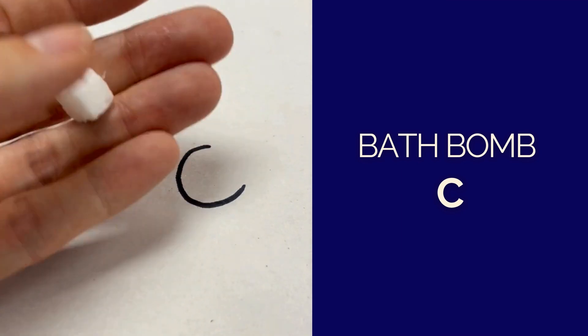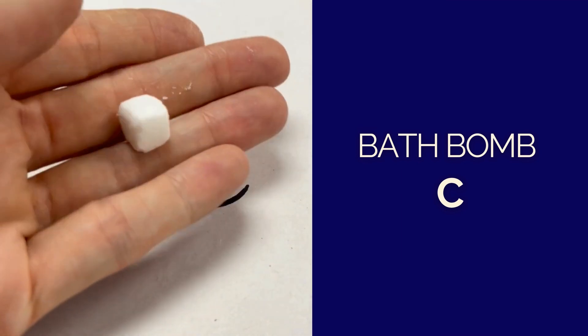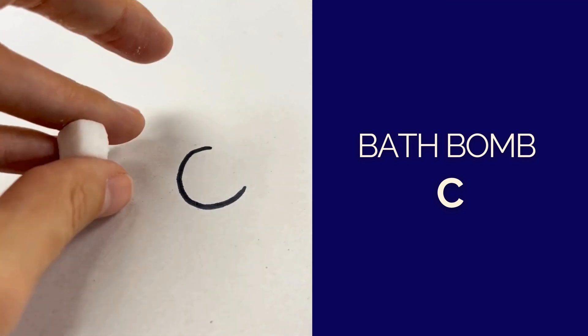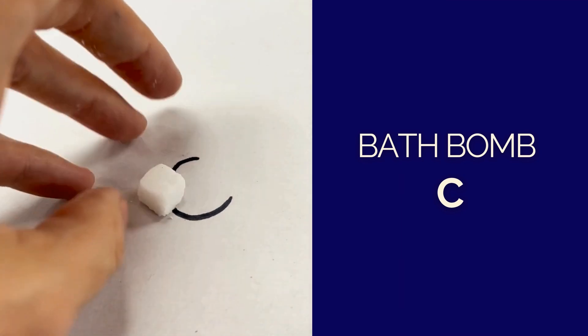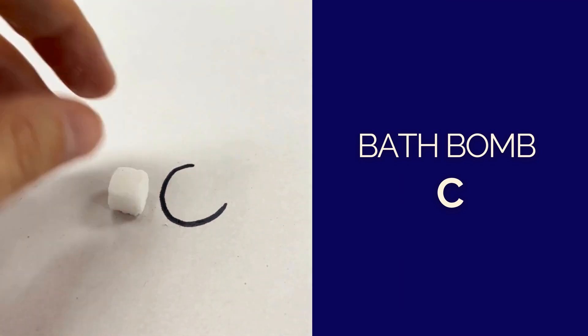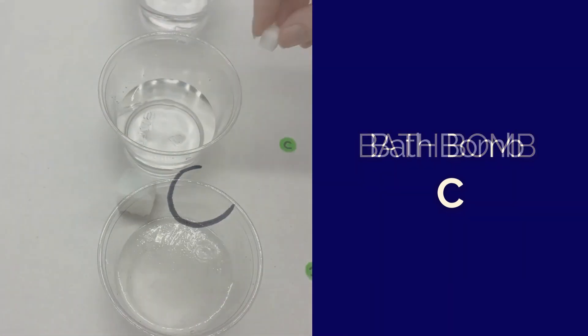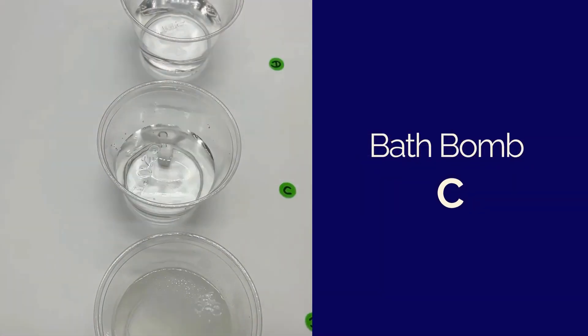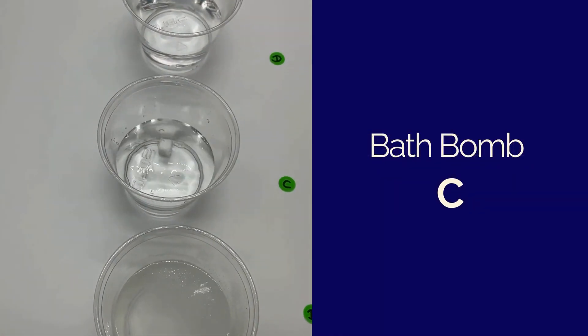Text reads: Bath Bomb C. A small white chalky cube sits on a table labeled C. It is picked up and placed into a cup of water labeled C.